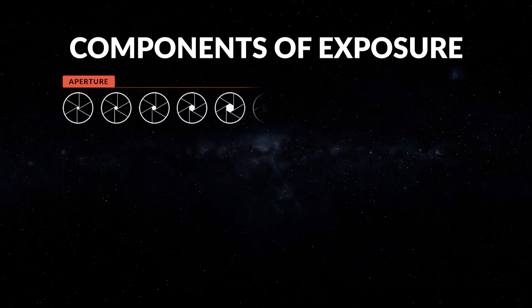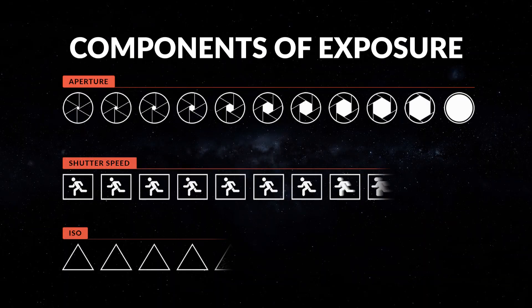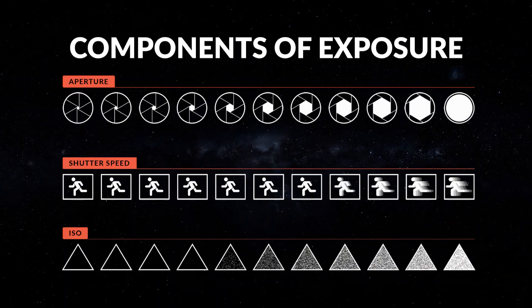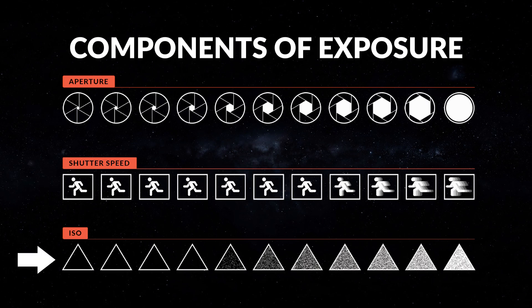What is ISO? It's one of the three fundamental components that controls the brightness of your image: aperture, shutter speed, and ISO.